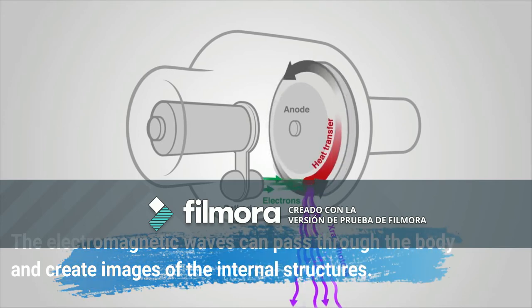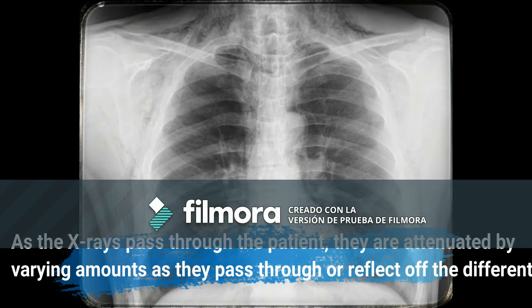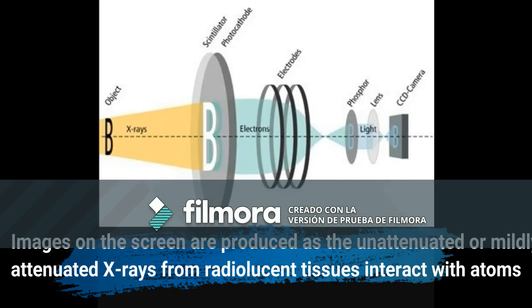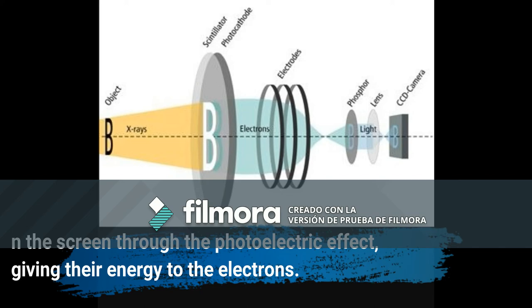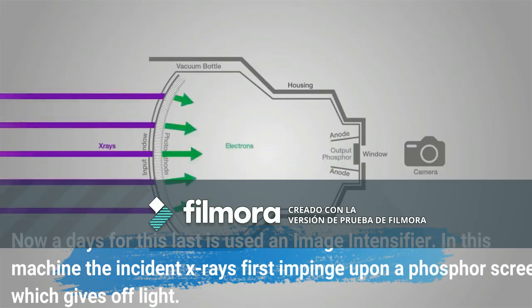Electromagnetic waves can pass through the body and create images of internal structures. As the x-rays pass through the patient, they are attenuated by varying amounts as they pass through or reflect off the different tissues of the body, casting an x-ray shadow of the radiopaque tissues, such as bone tissue, on the fluorescent screen. Images on the screen are produced as the unattenuated or mildly attenuated x-rays from radiolucent tissues interact with atoms in the screen through the photoelectric effect, giving their energy to the electrons. While much of the energy given to the electrons is dissipated as heat, a fraction of it is given off as visible light.